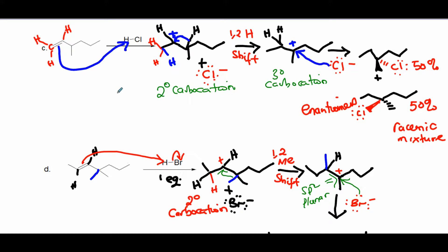Next question: this sp2 carbon has two hydrogens and the adjacent one has one hydrogen, so according to Markovnikov's rule the carbon with more hydrogens receives the H from the acid. The adjacent carbon gets the plus sign, forming a secondary carbocation, and the Cl leaves.